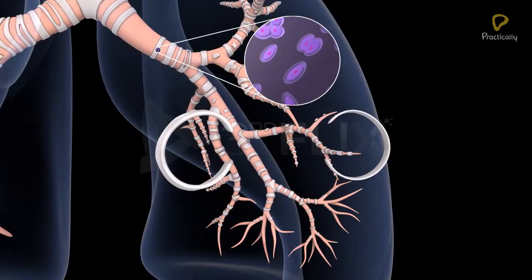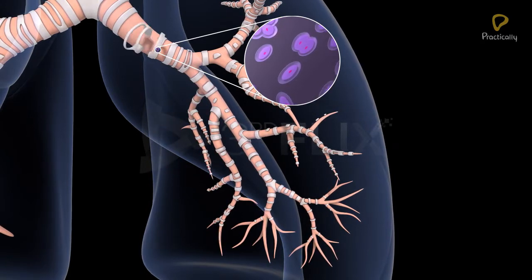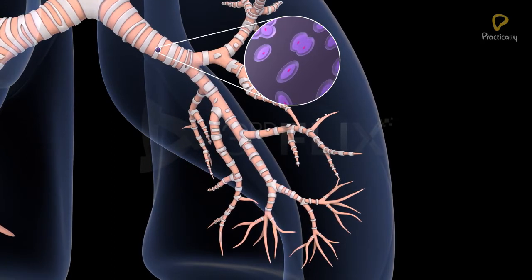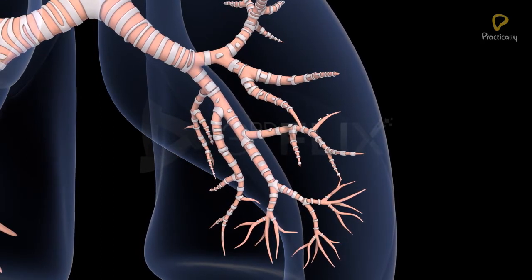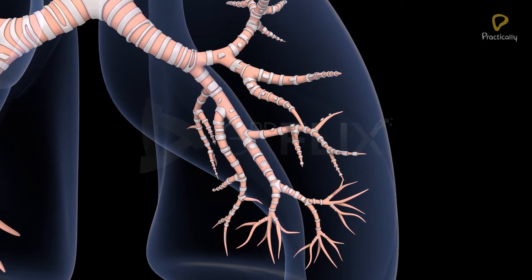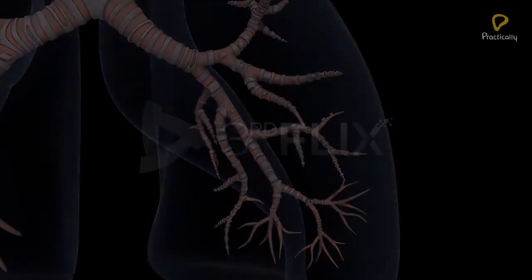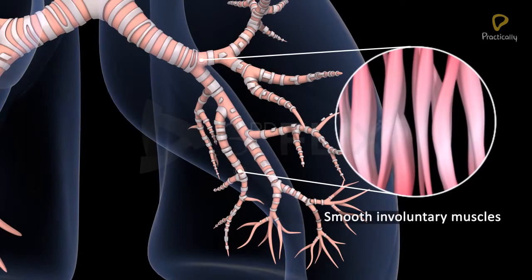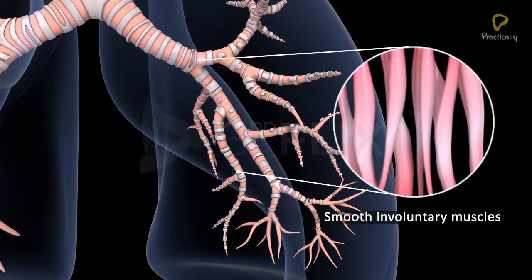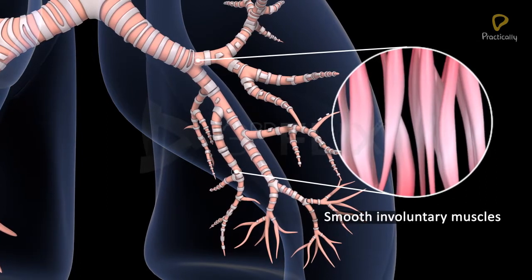Incomplete C-shaped hyaline cartilage rings are found in the walls of the bronchi, but in the bronchioles they are gradually replaced by plates of cartilage and finally disappear. Smooth involuntary muscles are also present in the walls of the bronchi and bronchioles.